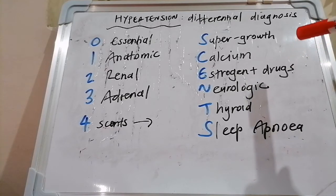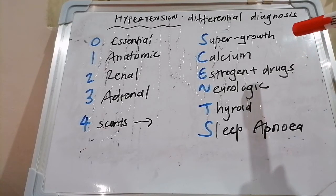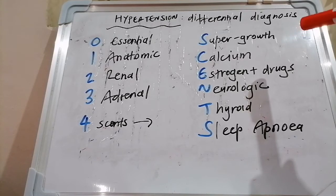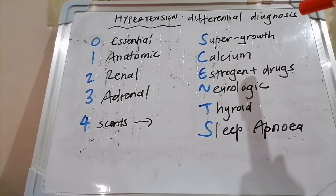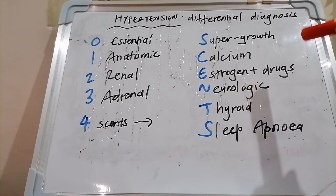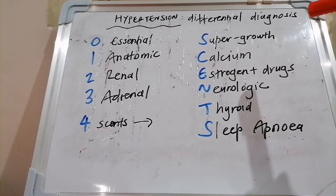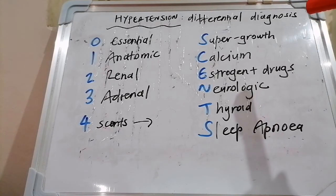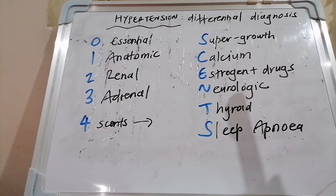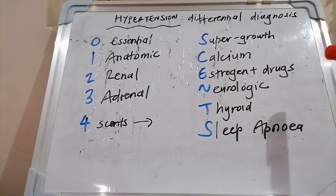E stands for estrogen and drugs — all of these can cause hypertension: NSAIDs, corticosteroids, anabolic steroids, oral contraceptives, cocaine, amphetamines, monoamine oxidase inhibitors with the cheese reaction, SNRIs, SSRIs, erythropoietin, cyclosporine, tacrolimus, midodrine, alcohol excess, and licorice.